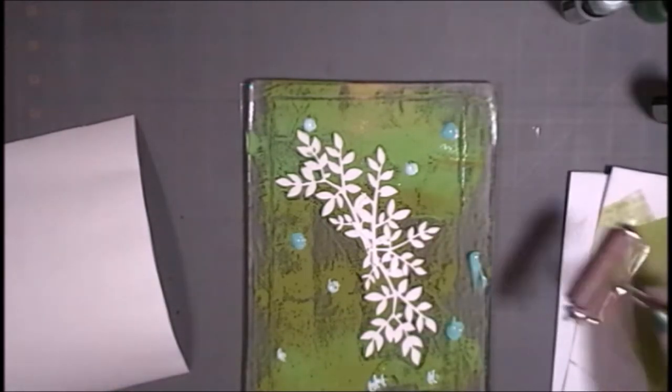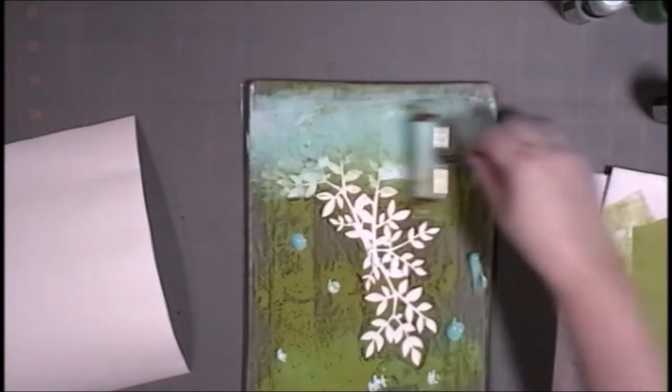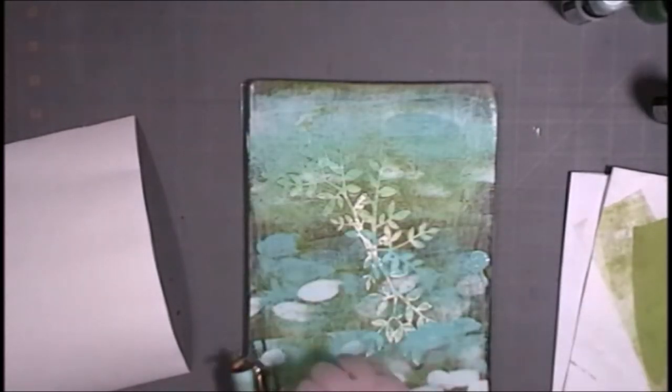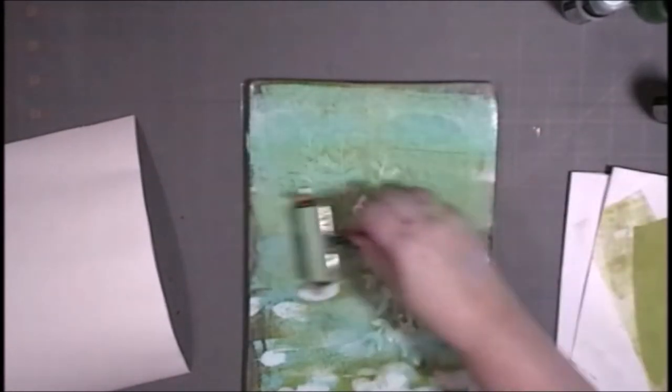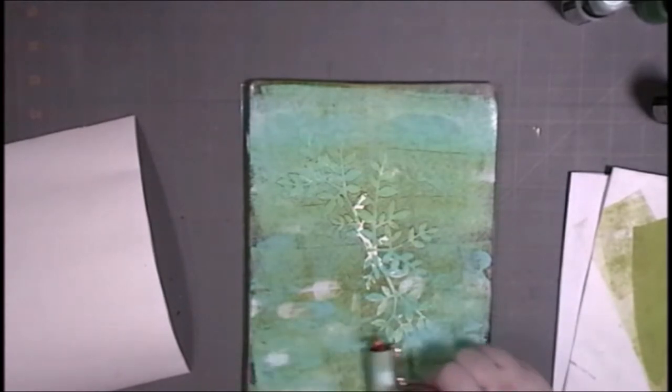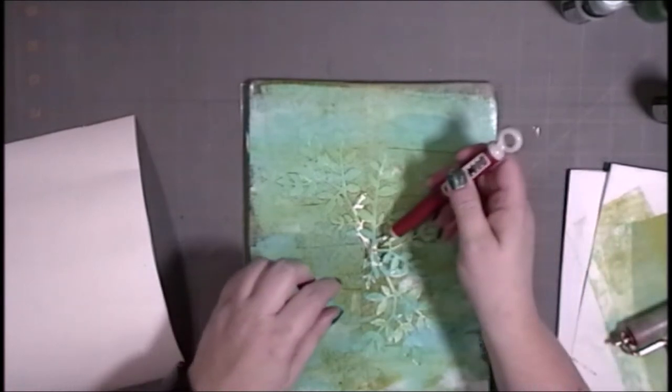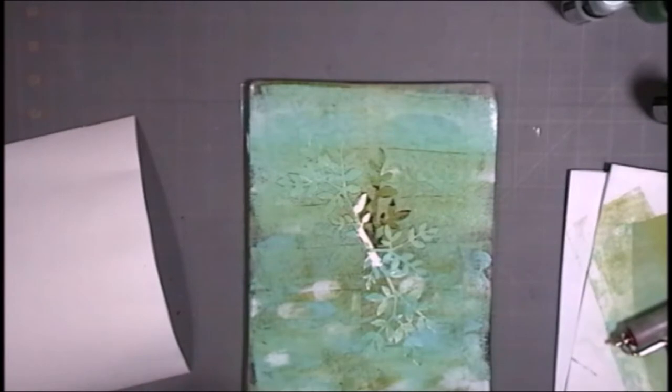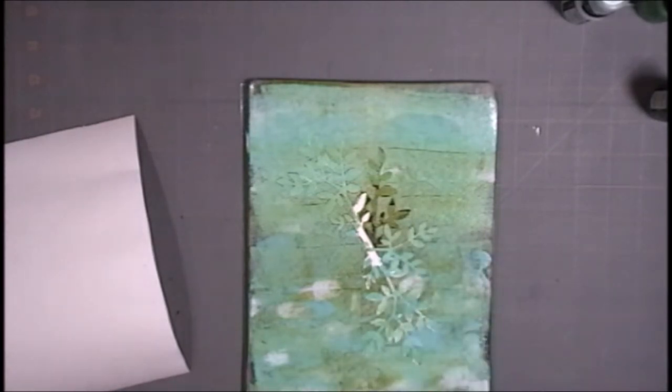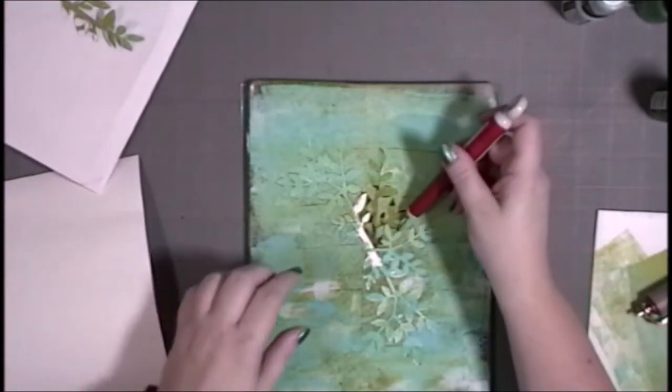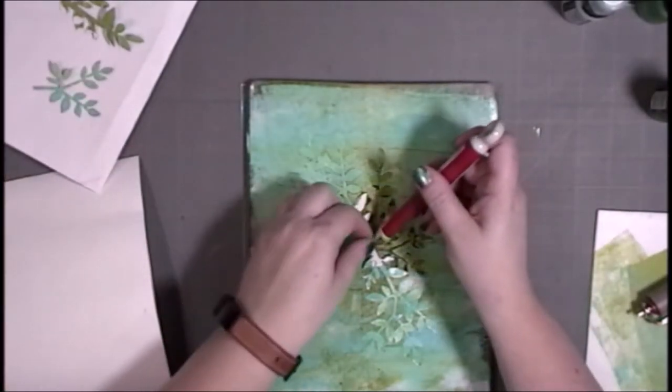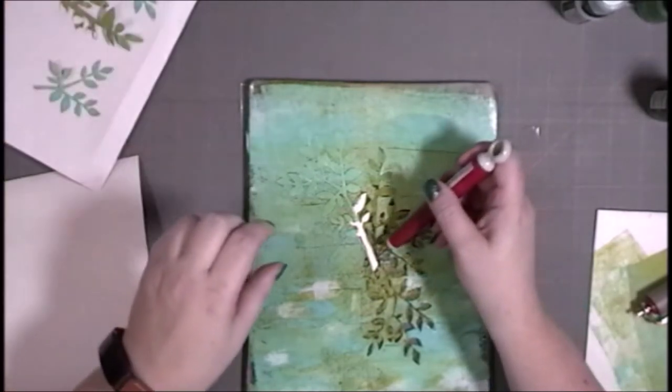So back to what this process is. I wanted to see if I could create intentional layers with my gel plate. I have used my gel plate before with colors, with stencils, but not in trying to create an actual image. I learned a couple of things in this process. I learned that you can actually use your gel plate to create a specific image, not just an abstract background. I also learned that I did it in the wrong order. So more on that later.